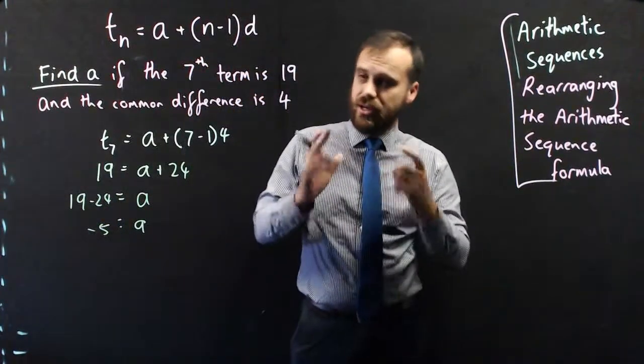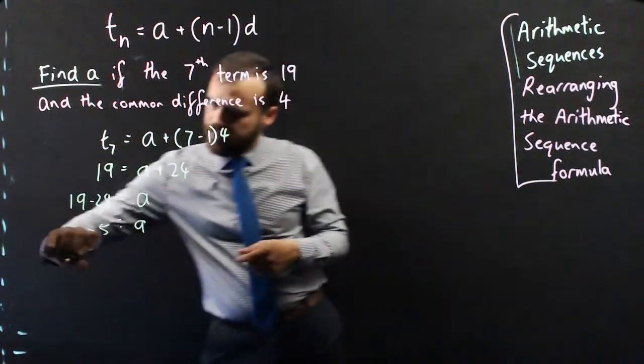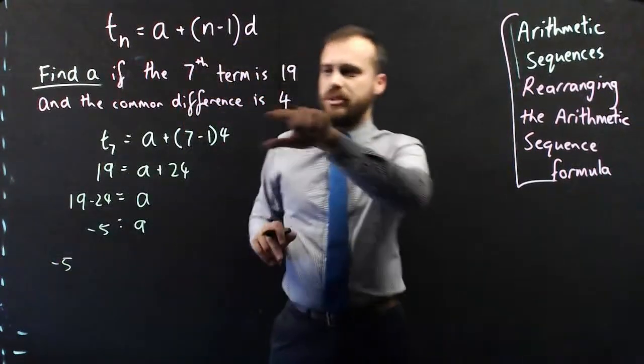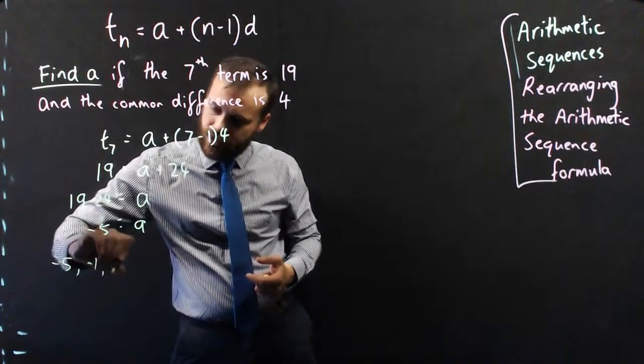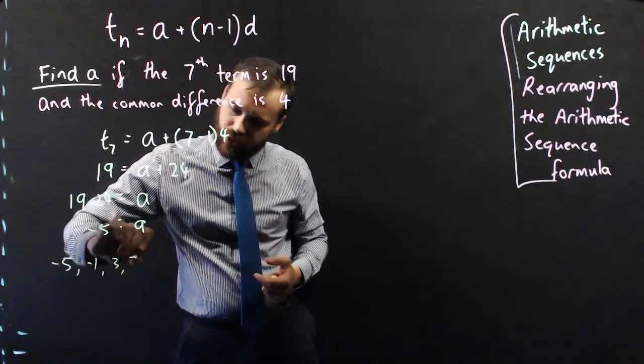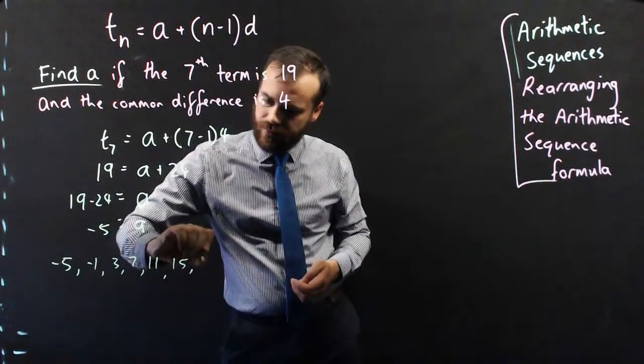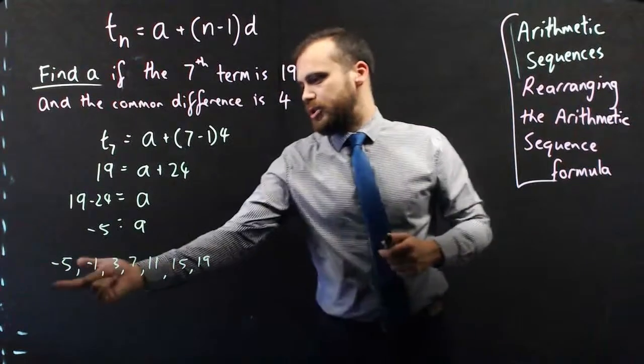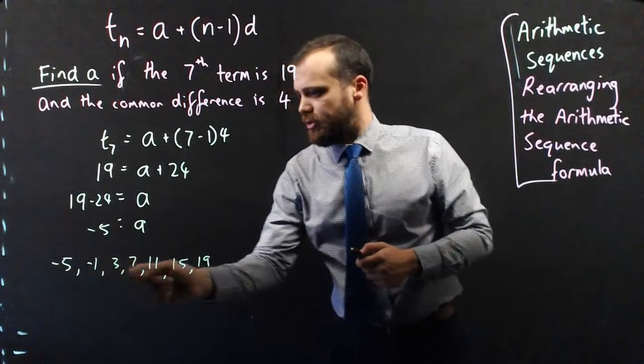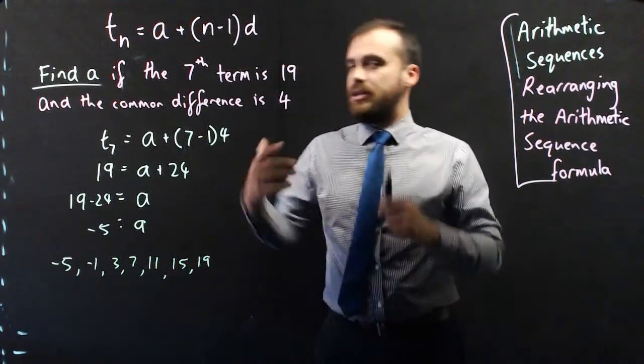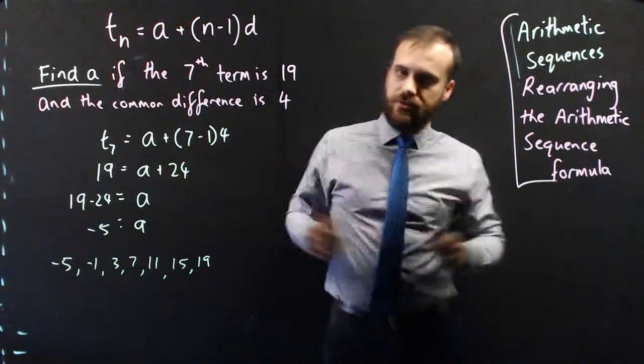So thinking about that, the first term is negative 5, and the common difference is 4. So the whole sequence would be negative 5, plus 4 is negative 1, plus 4 is 3, plus 4 is 7, 11, 15, 19. The first term was negative 5, which I just found, and the seventh term was 19. That's 1, 2, 3, 4, 5, 6, 7 terms. All I've done is substitute in my numbers, rearrange for A, finished.